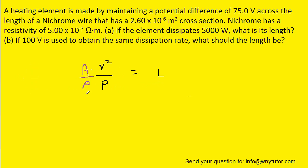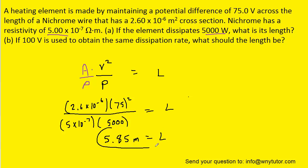We can now simply plug in the known values. Just note that this value here is the resistivity ρ, which was given to us in the question. And then this is the power, P, which was also given in the question. And when we simplify this expression, we get a value of 5.85 meters for the length of the wire in part A.